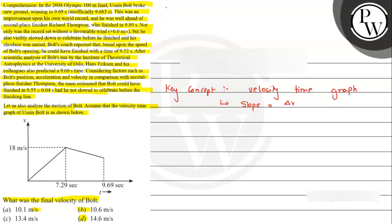That is delta V by delta T gives us acceleration, and this can be written as tan theta.